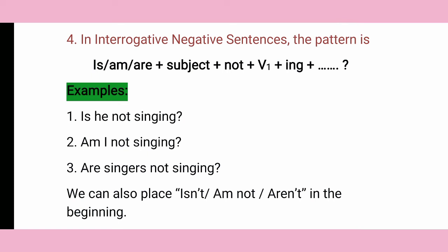Also, instead of writing 'is not', 'am not', or 'are not', we can use contractions: isn't, am not, and aren't. This is a good trick to use in these kinds of sentences. Hope that after watching this video, all doubts about present continuous tense are clear, because it is very easy to learn.